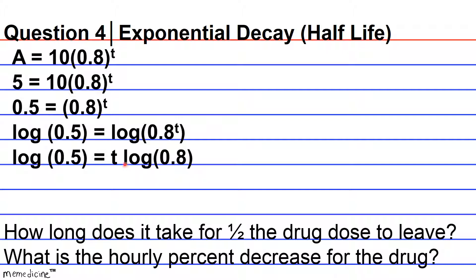And now basically what we can do is solve for t, or the time for one half of the drug to remain and one half of the drug to leave. So basically what we have to do is divide both sides of the equation by the log of 0.8.